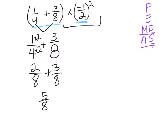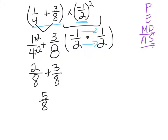But remember, I still have the rest of my problem to solve. Now let's look at the second set of parentheses, which has an exponent. When anything is squared, it is multiplied by itself — so this is really negative 1 half times negative 1 half. When we multiply fractions, we multiply straight across. So negative 1 times negative 1: a negative times a negative is a positive. Negative 2 times negative 2 gives me positive 4. So the second parentheses becomes 1 fourth because a negative times a negative is a positive.